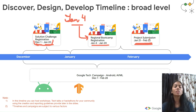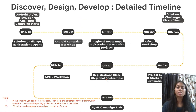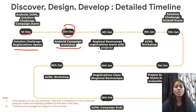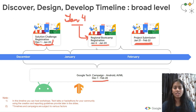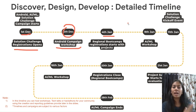The Android and AI/ML campaign runs from December 1st to February 28th. The AI/ML and Solution Challenge content started from December 1st. On December 12th there is an Android campaign workshop. Regional bootcamp registration starts January 4th — take a screenshot so you don't fall behind.